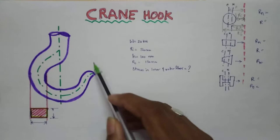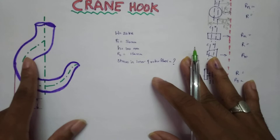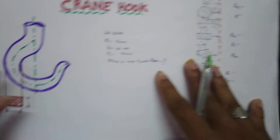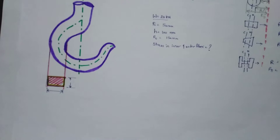Hello friends, today we are going to solve a problem on crane hook. This is a diagram of a crane hook with a rectangular cross section. There are many types of cross sections in a crane hook, like circular, rectangular, tapered, and I-section. So let's start our problem.